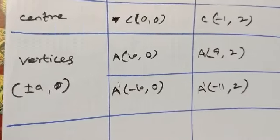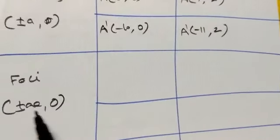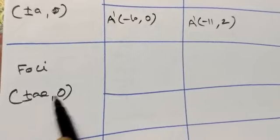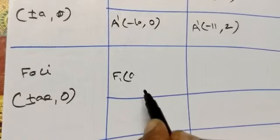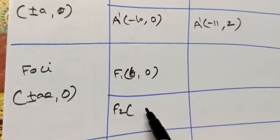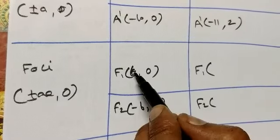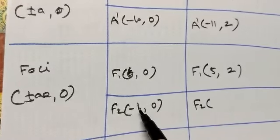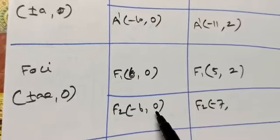Foci F(±ae,0) = (±6,0). F1(6,0): when X=6, x=5, y=2. F2(-6,0): when X=-6, x=-7, y=2. So F1(5,2) and F2(-7,2).